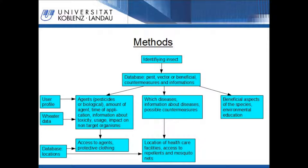To determine the best time point for the application, it is useful to integrate data about the weather. In the next step, the augmented reality software shows the user the locations where they have access to agents against the pest or where they can buy protective clothing. If the insect is a vector for diseases, the user gets information about the disease and about possible countermeasures. In this case, the augmented reality software shows the user the location of healthcare facilities or where the user can get access to repellents or mosquito nets.